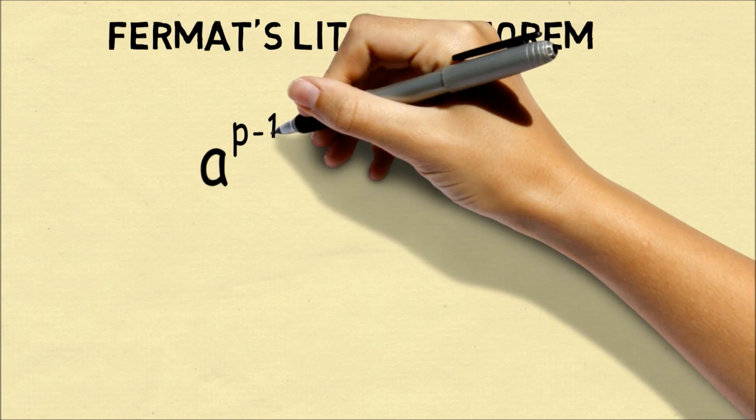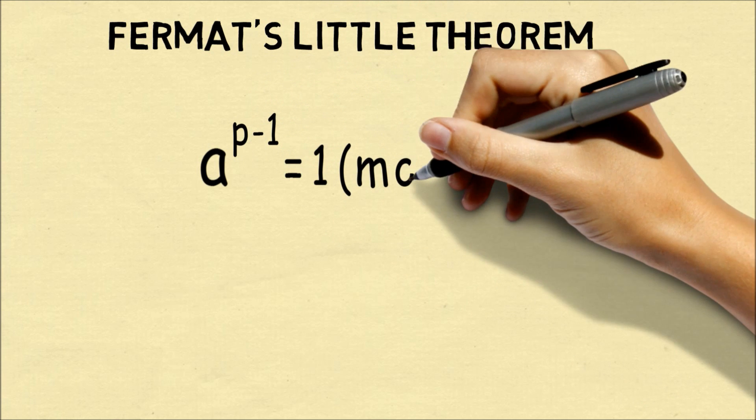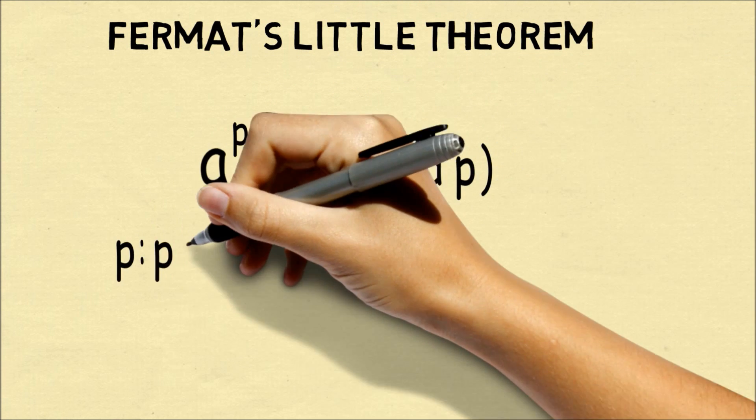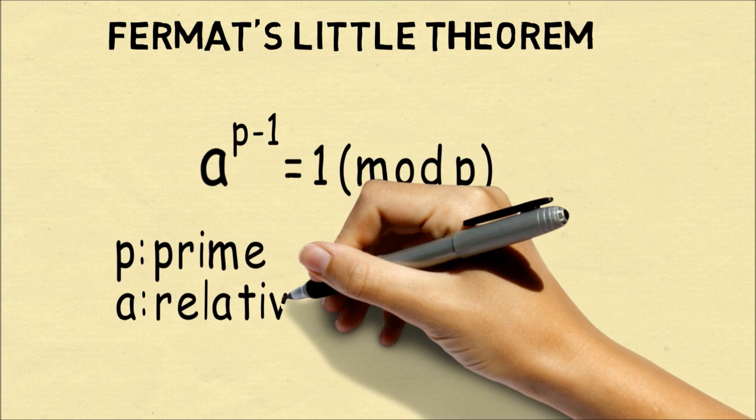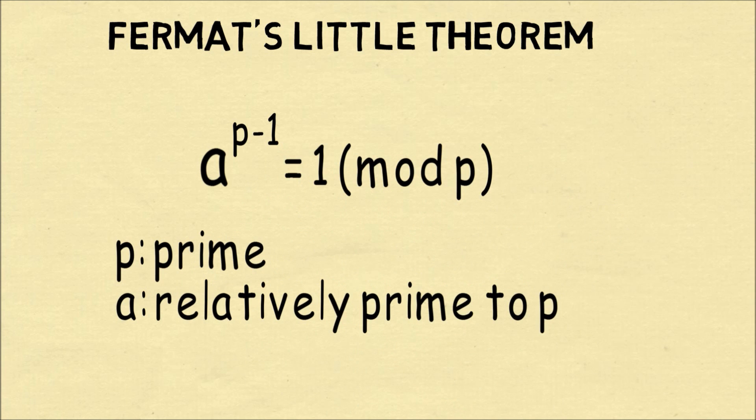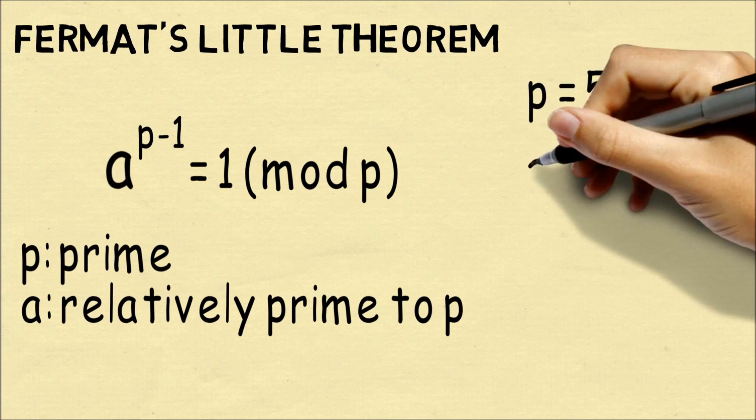So Fermat's Little Theorem says that if you take a number a and raise it to the power of p minus 1, you'll always have a remainder of 1 relative to p. Here we want p to be prime and a to be relatively prime to p.